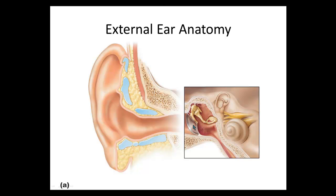Attached to the tympanic membrane is the first of three ear bones — the malleus, which looks like a mallet. When the tympanic membrane vibrates with incoming sound, it sets the ear bones in motion: starting with the malleus, which moves the incus (the middle bone), which then moves the stapes, the last bone, which attaches to the inner ear.